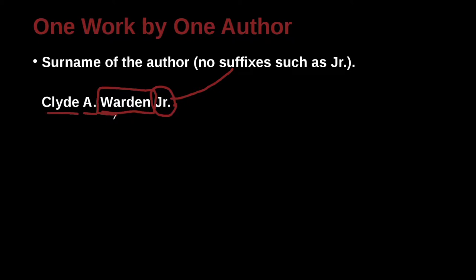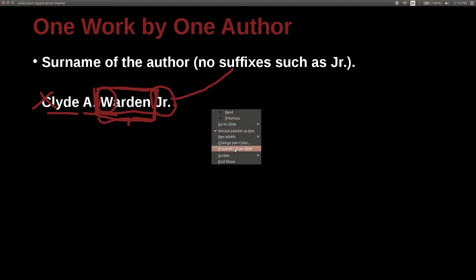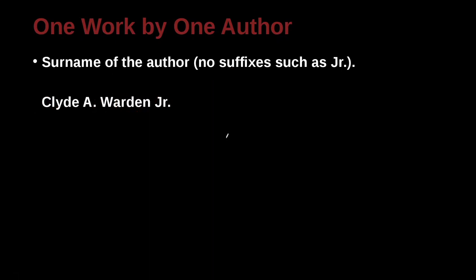When we are citing a person, we pay attention to the family name, or last name. This is also the name we use to order our list — that is, alphabetical order A to Z — based on the W in Warden, not on the C of the first name. We do this because we're going to order our reference list later.